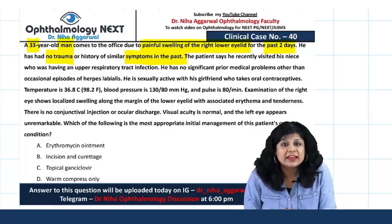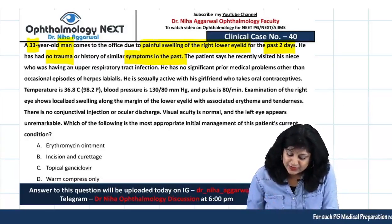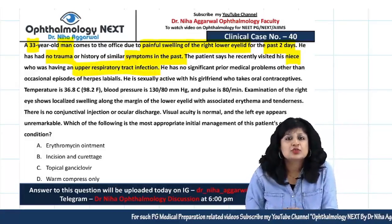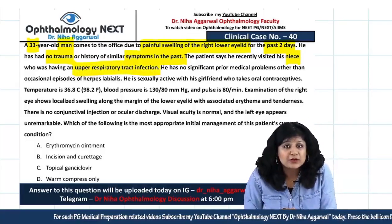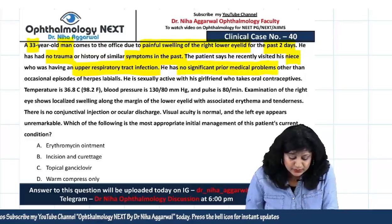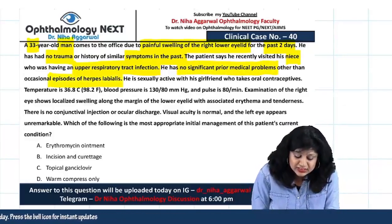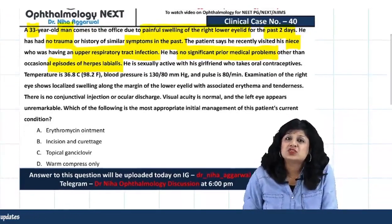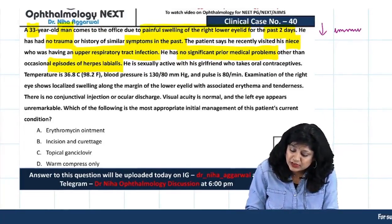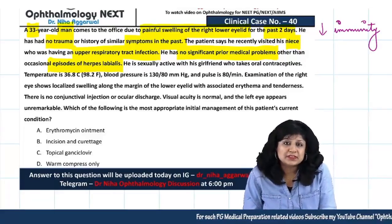They have given you the negative history — nothing related to trauma, nothing significant in the past. The patient says he has visited his niece who was having an upper respiratory tract infection, so there is an exposure to a focus of infection. He has no significant prior medical problems other than occasional episodes of herpes labialis, which indicates decreased immunity — this patient is prone to repeated infections.